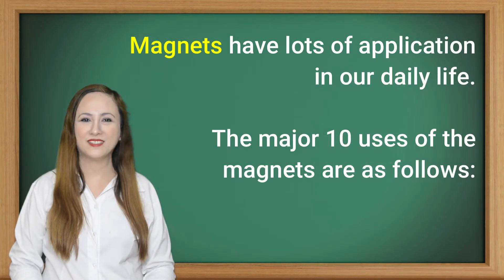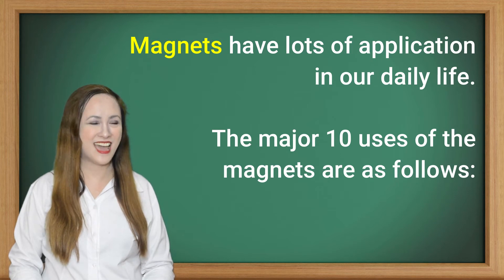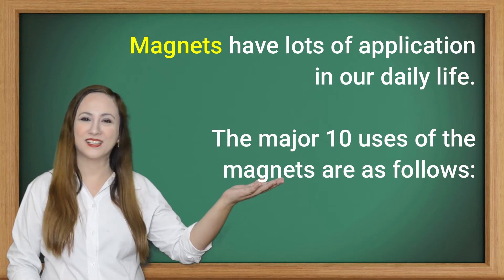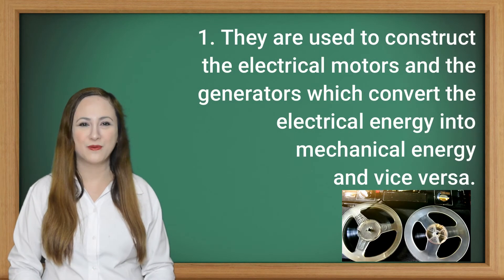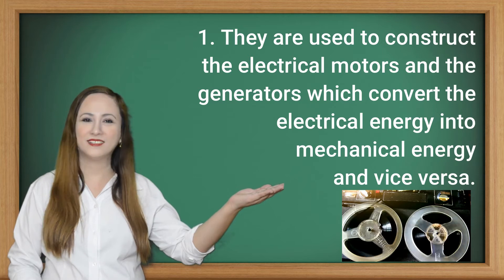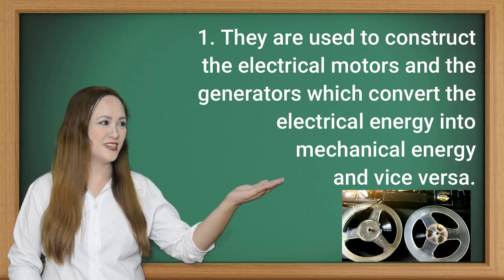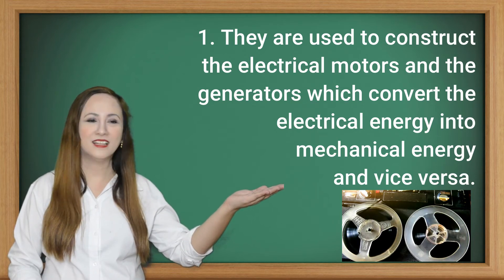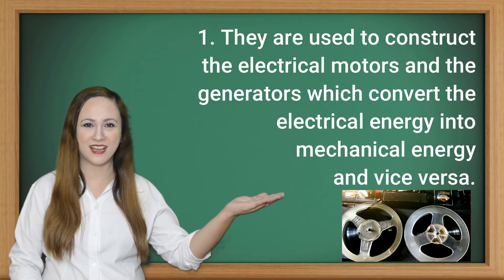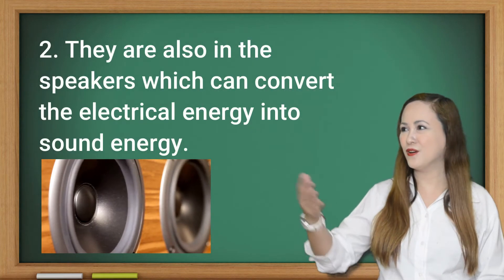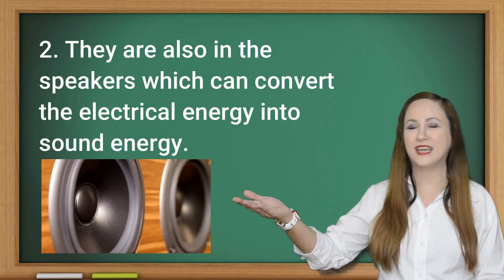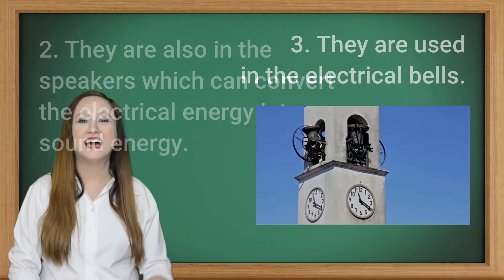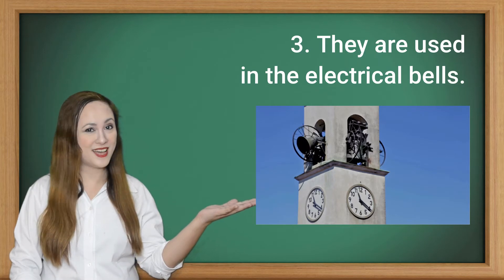Magnets have lots of applications in our daily life. The major ten uses of magnets are as follows. Number one, they are used to construct electrical motors and generators which convert electrical energy into mechanical energy and vice versa. Number two, they are also used in speakers which convert electrical energy into sound energy. Number three, they are used in electrical belts.